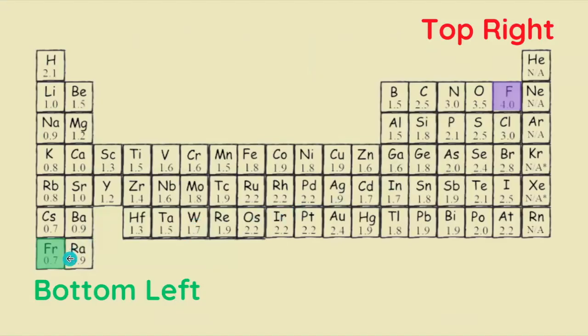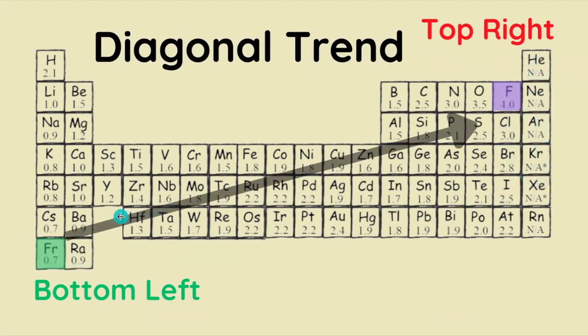These two bookends make up the bottom left and top right corners—we're just going to ignore the noble gases because they don't even have an electronegativity. There's a general increase in electronegativity values as we go up and to the right.